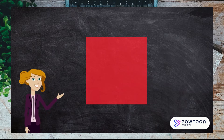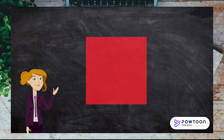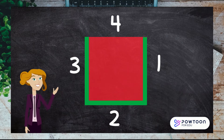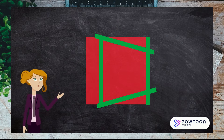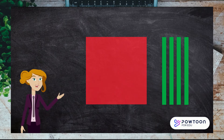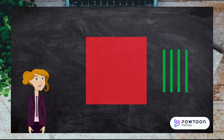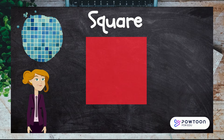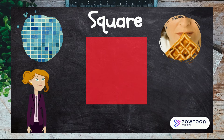The next shape has four sides — one, two, three, four. And the sides are all the same length. It's a square. Where have you seen squares before?